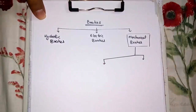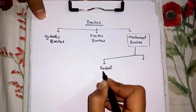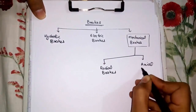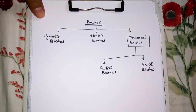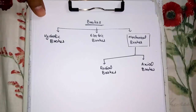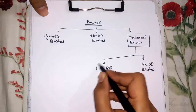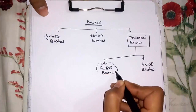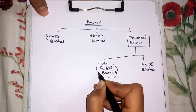We will discuss only Mechanical Brakes. Mechanical Brakes are divided into Radial Brakes and Axial Brakes. In Radial Brakes, the braking force is along the radius of the wheel. In Axial Brakes, the braking force is along the axis of the wheel. Our main topic is Shoe Brakes, which lies under the category of Radial Brakes.